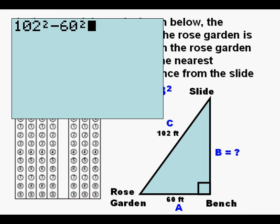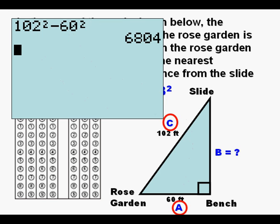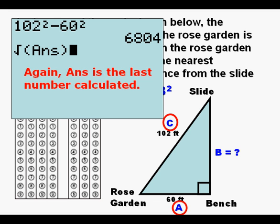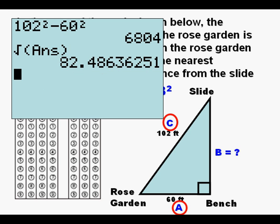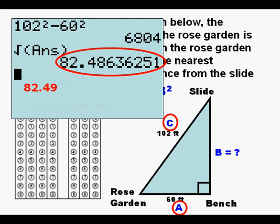And now we substitute in using the calculator, for C 102, for A 60, and we get B squared equal to 6,804. We take the square root of 6,804, and ANS again is the last number calculated, and we get 82.48636251. But it asks for rounding to the nearest hundredth, and what is that? 82.49.